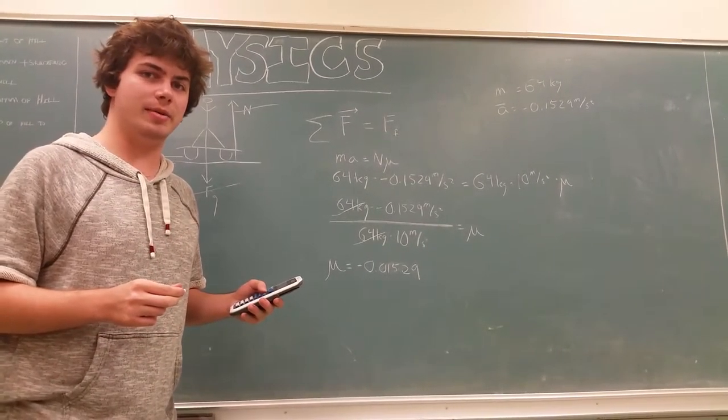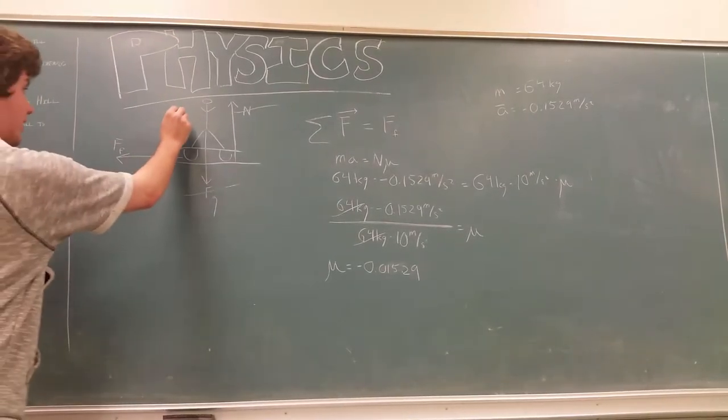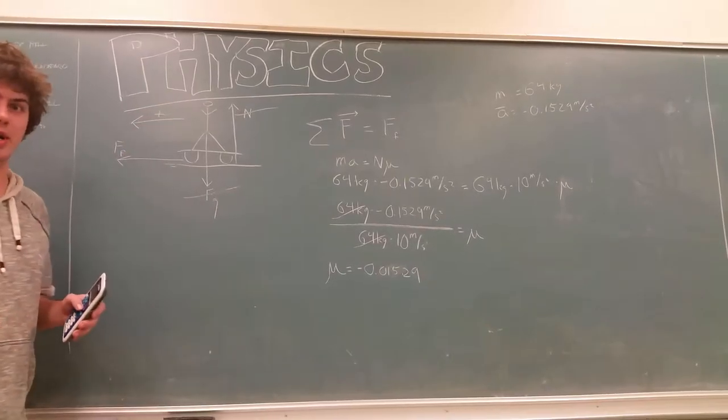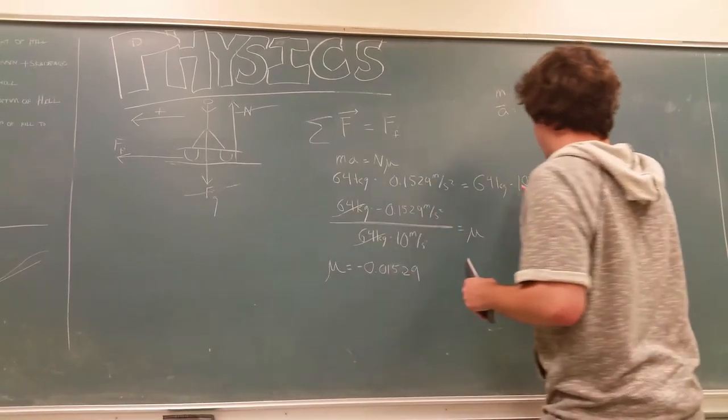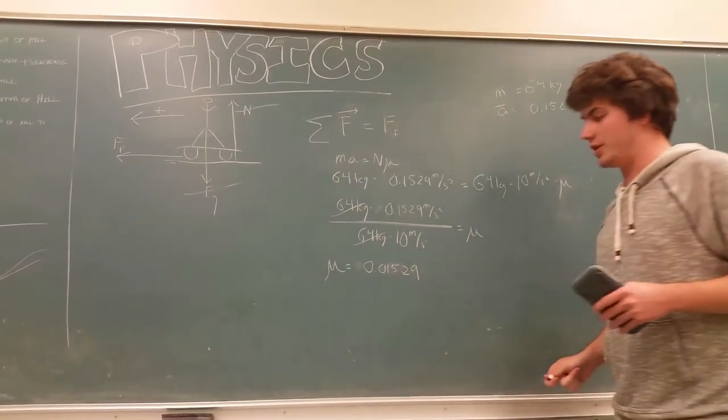But wait, it's negative. That's not really supposed to happen. So, what we can do is redefine our axes so that this is the positive direction. That means that acceleration becomes positive, you can get rid of all of these negative signs, and you get a positive coefficient of friction.